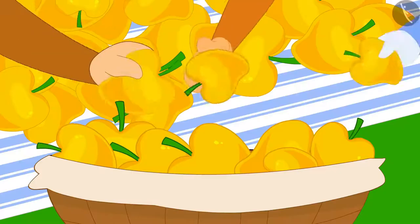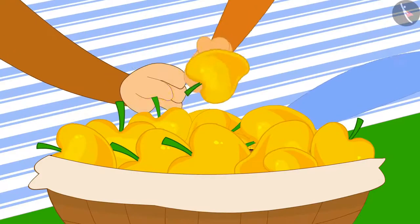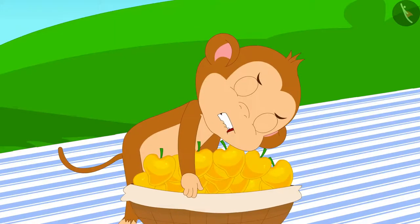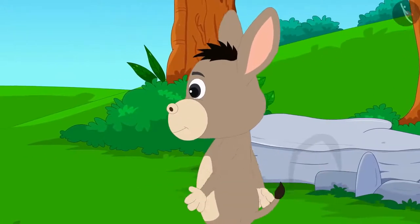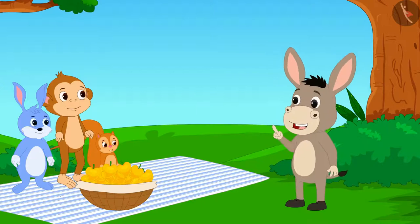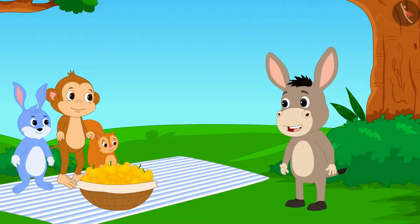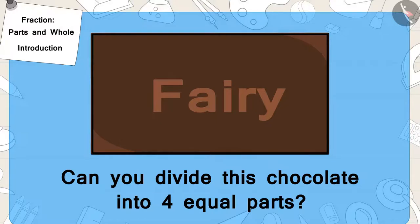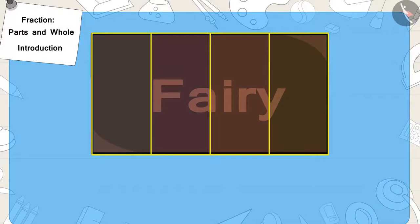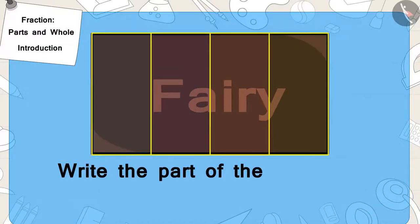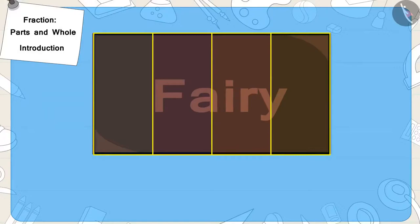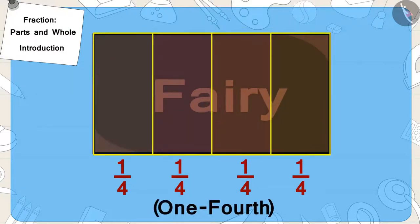Chanda agreed and filled all the mangoes in the basket. But when they tried to lift the basket, it was too heavy and none of them were able to lift it. Just then, Bholla the donkey was passing by. Bholla also decided to help and in return, he too asked for an equal share of chocolate. Now, can you divide this chocolate into four equal parts? Write the part of the chocolate received by each one as a fraction. If you wish to, you may stop the video and find the answer. Well done, children — you have found the correct answer. We also call one by four as one-fourth.